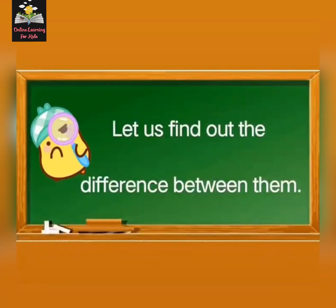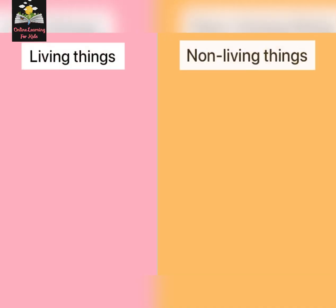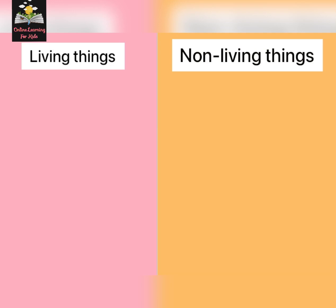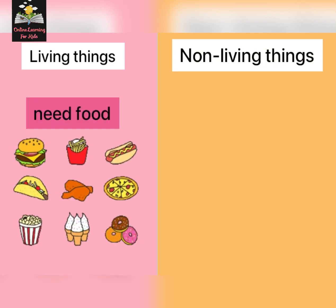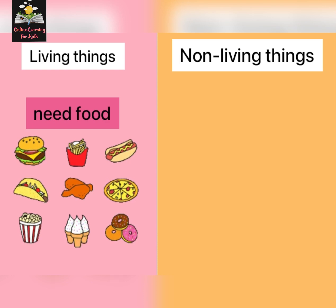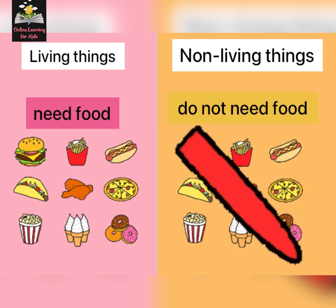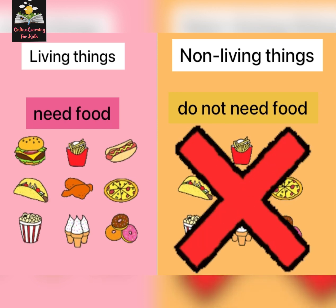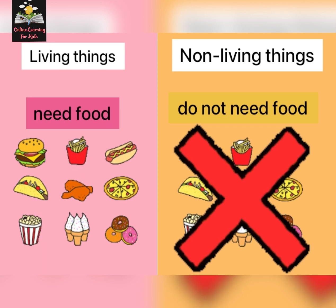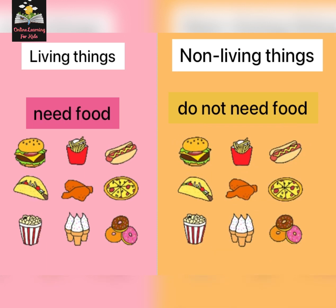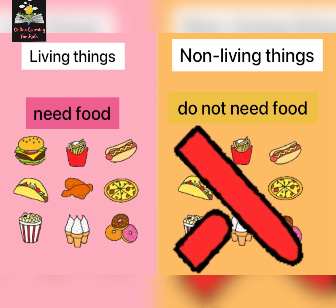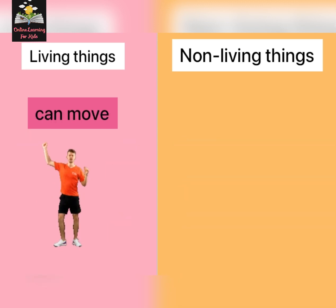Let us find out the difference between living things and non-living things. Living things need food, and non-living things do not need food — like chair, table, and books, they do not need food. Living things can move.